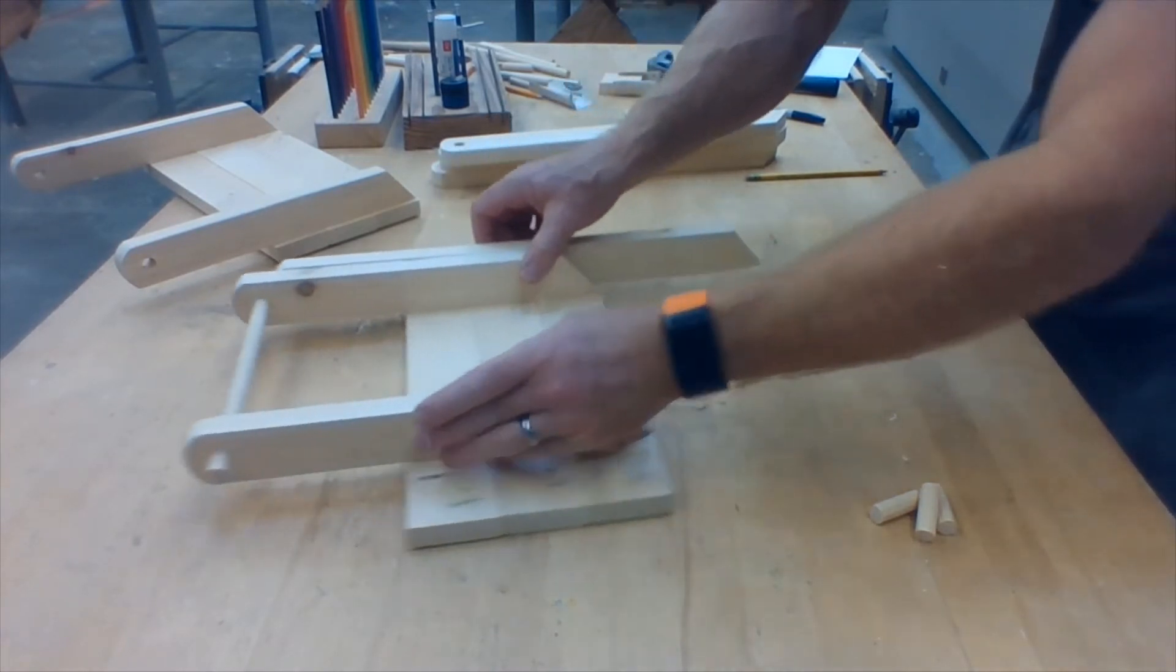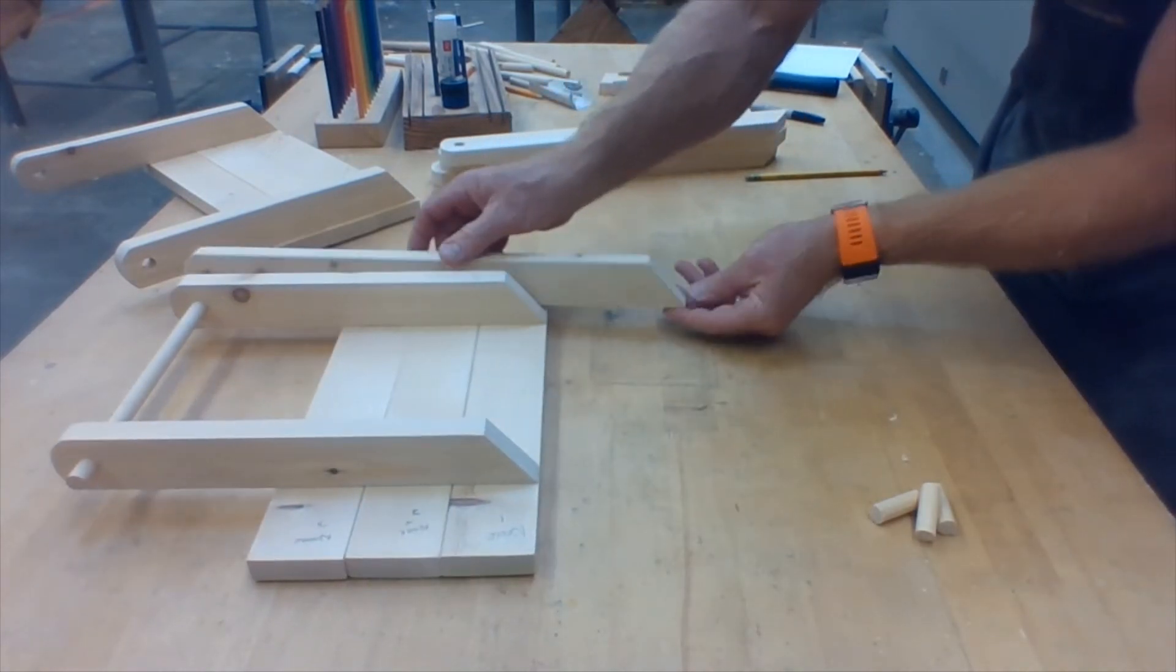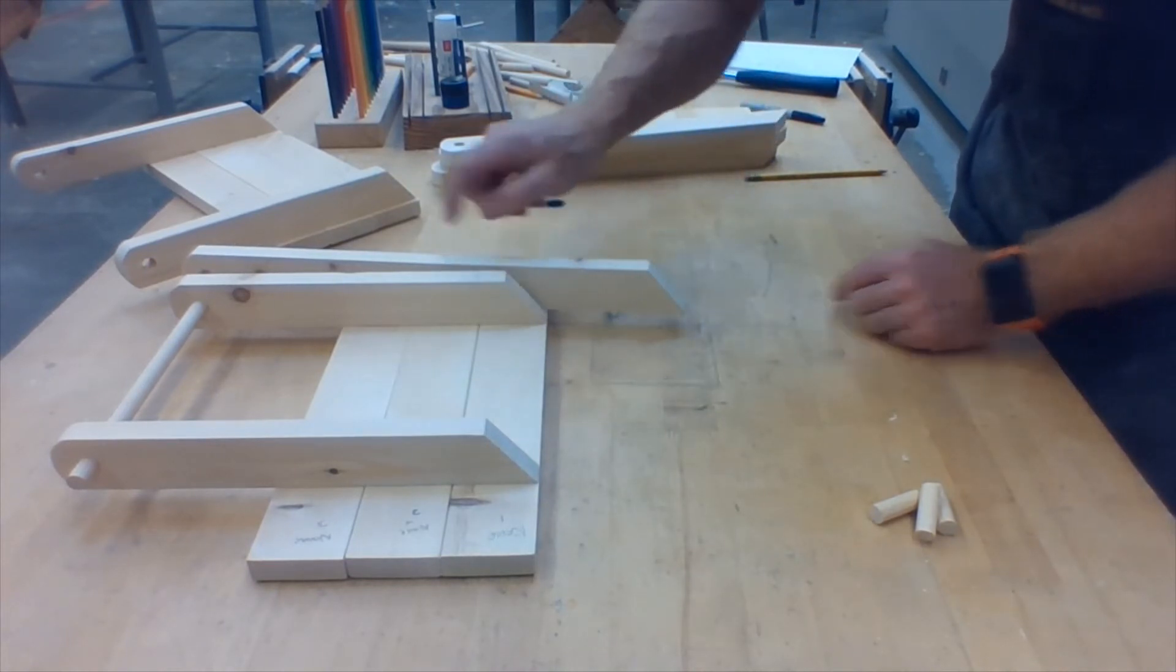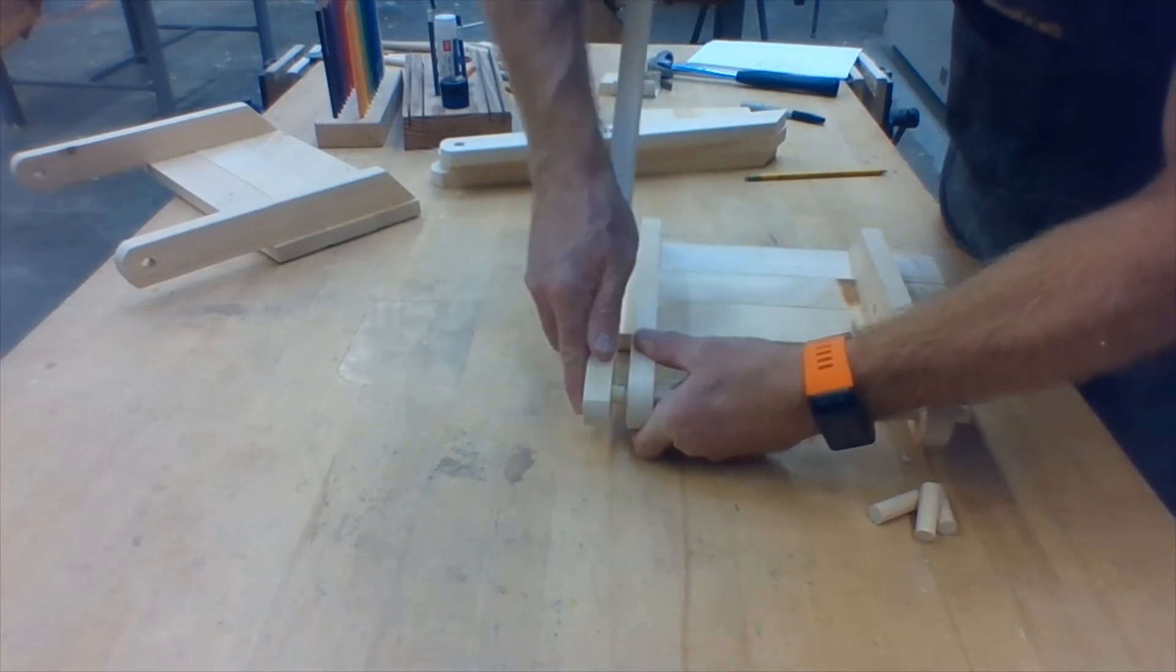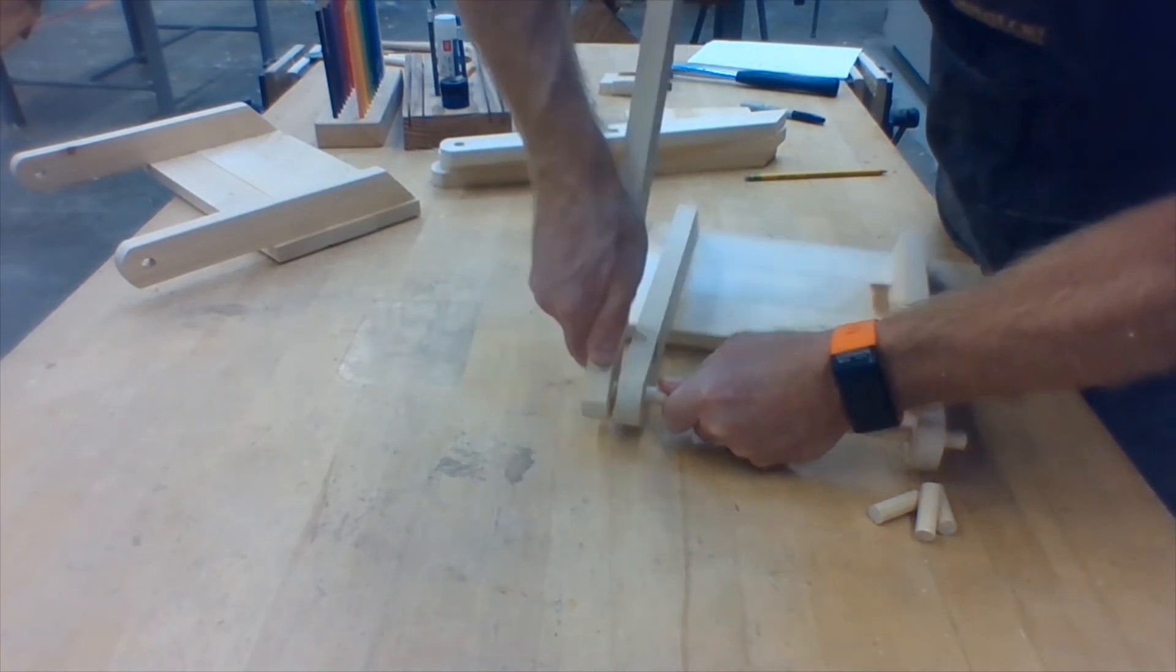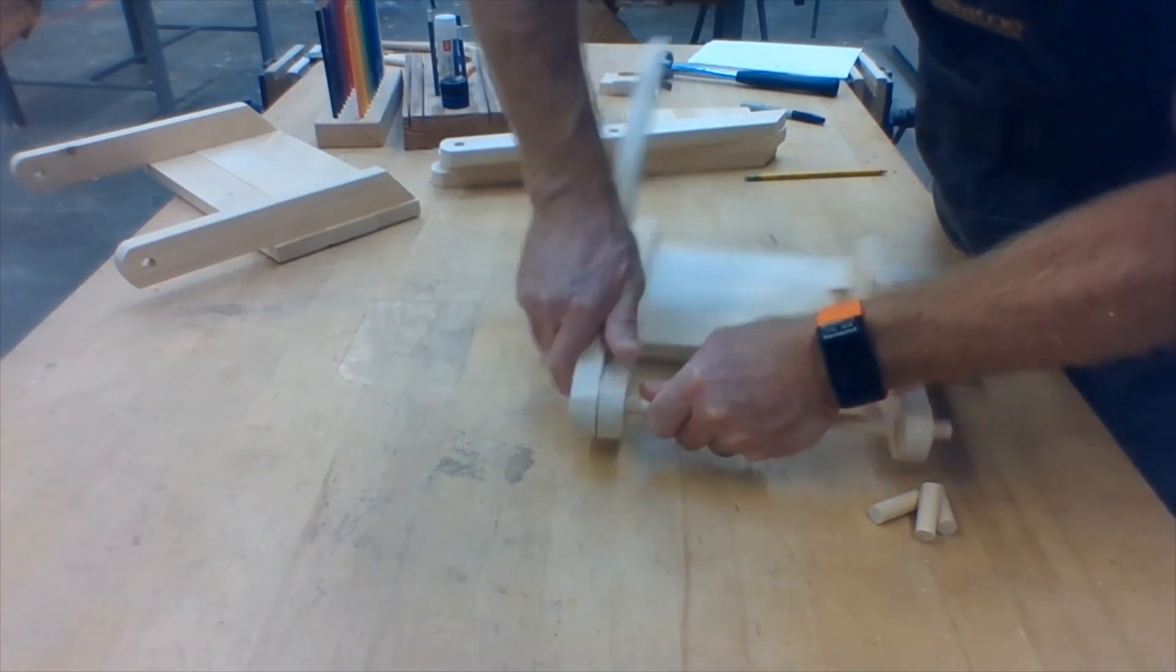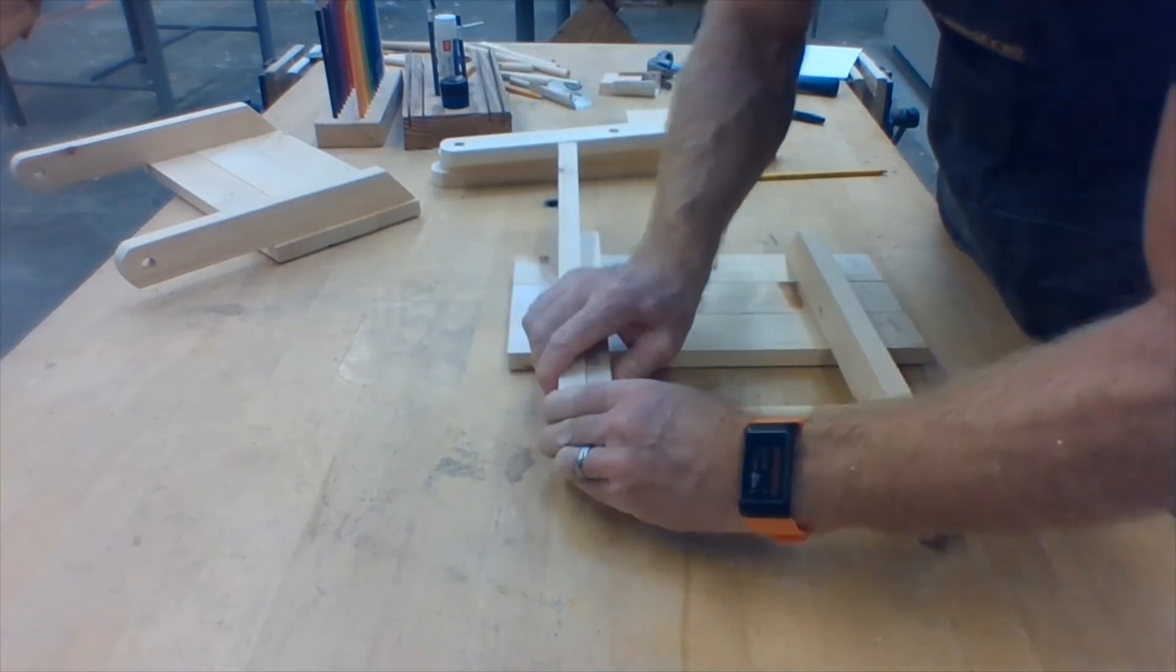To assemble this, it's important that you check that the angle of the leg matches the angle of the seat support. Once you've done that, you can put it onto the dowel and by rotating it up and down, slide it on so it's right tight against the seat support.